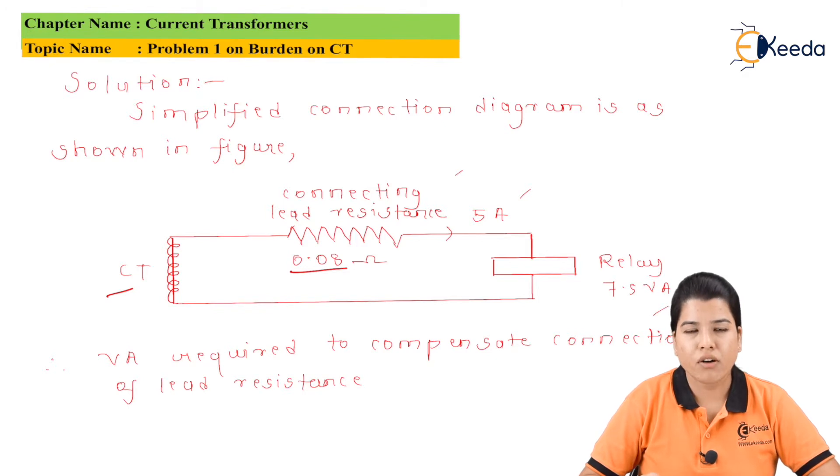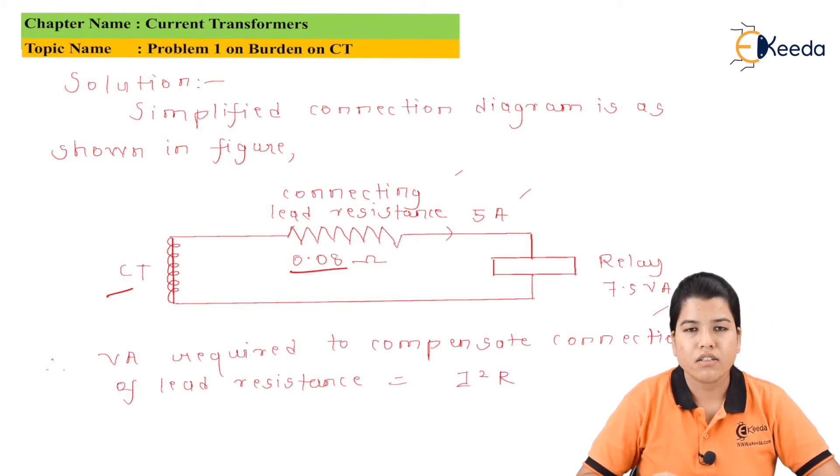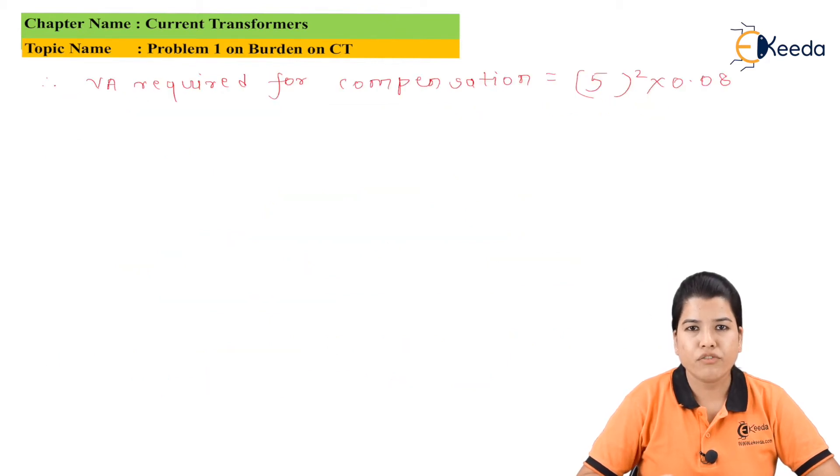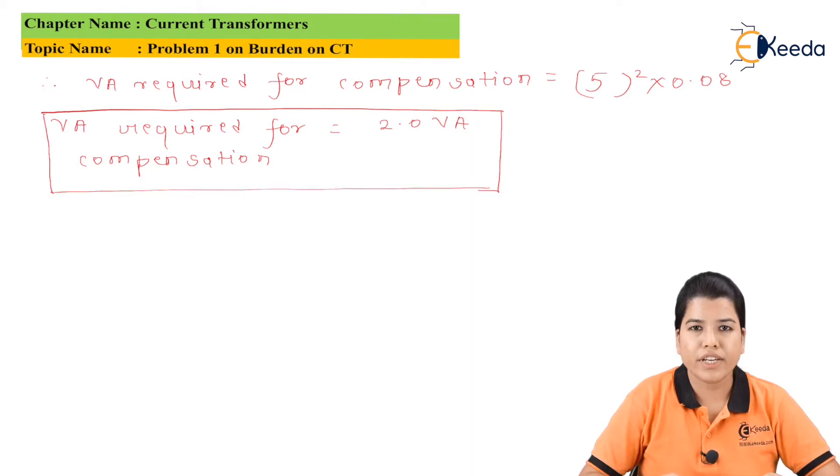Therefore the VA required for the compensation of the lead resistance is given by I square R. Substituting the values in this equation we get 5 square multiplied by 0.08. Therefore VA required for the compensation is equal to 2VA.